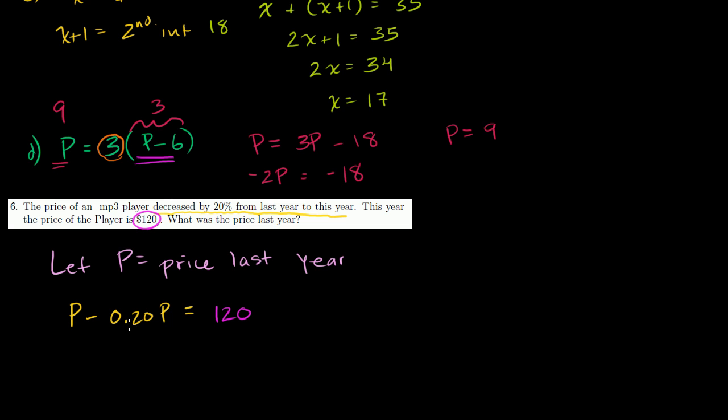Well, what's p minus 0.2, or minus 20% of p? We decreased by 20%. Well, you're going to be left with 80%. So we could say 80% of the price last year is equal to the price this year. And like we did before, we divide both sides by the coefficient on our variable. Divide both sides by 0.8 or 0.80, depending how you want to view it. 0.80. These cancel out. And so we have to divide 0.8 into $120.